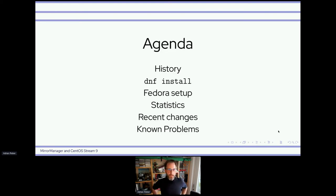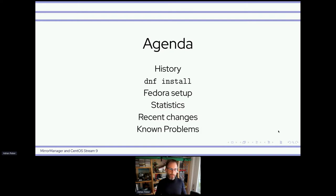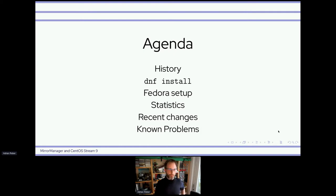The agenda of this talk: first I want to cover the history of Mirror Manager — since when we have it and what we use it for. Then I'll give details about what happens when you do a DNF install or DNF upgrade. Then I'll talk about the Fedora setup where CentOS Stream is also running, followed by statistics on what we are serving with Mirror Manager currently, recent changes we made, and finally known problems — especially those we are seeing in combination with CentOS Stream, since its setup is a bit different from Fedora.